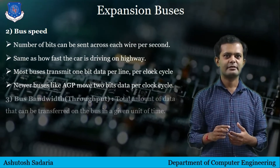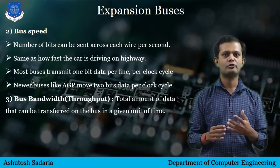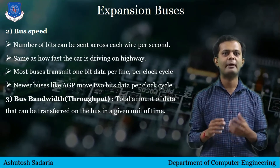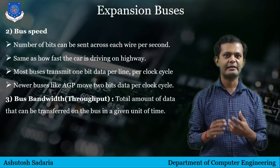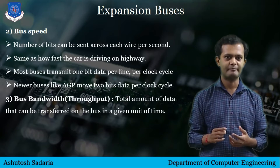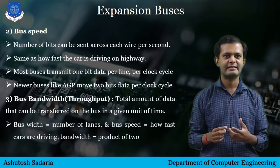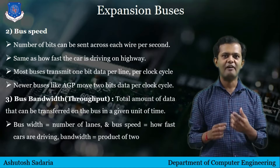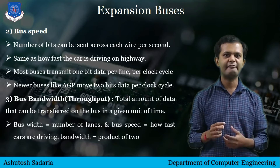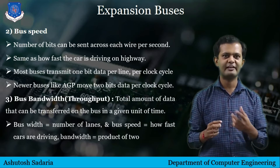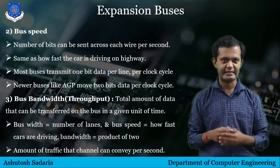The next standard is bus bandwidth, also called throughput. It refers to the total amount of data that can be transferred on the bus in a given amount of time. Using the highway analogy, if the bus width is the number of lanes and the bus speed is how fast the cars are driving, then the bandwidth is the product of those two and reflects the amount of traffic that the channel can convey per second.